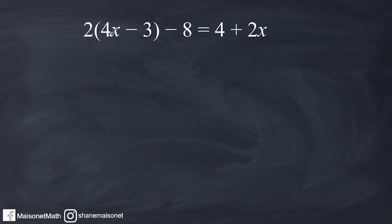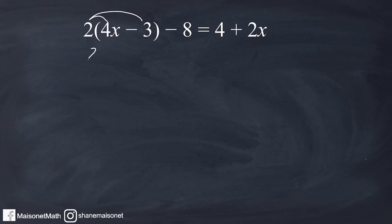What we have right here is a situation where we can apply the distributive property to simplify a bit. We are taking everything inside the parentheses and doubling each one of those terms, or multiplying them by 2. So two sets of 4x would be 8x, 2 times minus 3 is minus 6, and then we write the rest of our equation: minus 8 equals 4 plus 2x.